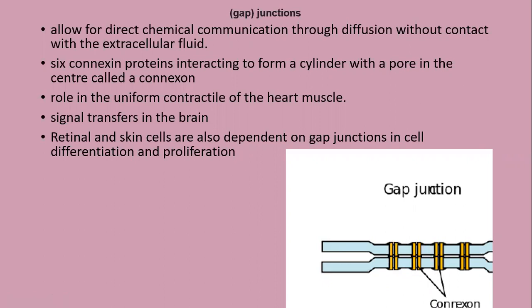Gap junctions are found, for example, in contractile heart muscle cells. They are also important in signal transduction in the brain, and retinal cells and skin cells depend on gap junctions for cell differentiation and proliferation.